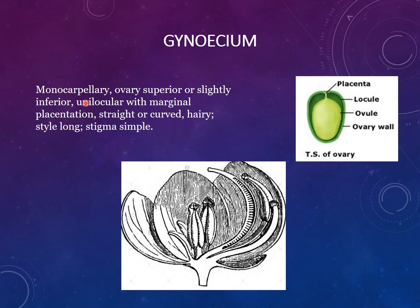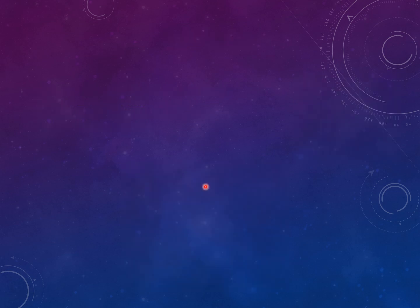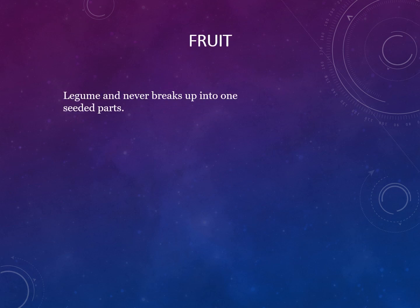The anthers are dithecal, that is two-celled anthers, and introrse — meaning they face the center of the flower. The gynoecium consists of one carpel, that is monocarpellary. Ovary position is superior — calyx and corolla are found below the ovary. Unilocular condition, one locule is present, and the placentation is marginal. The style is straight or curved, hairy, with a simple stigma.